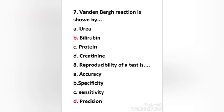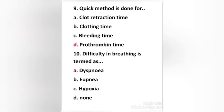Ninth question: the Quick method is done for — clot retraction time, clotting time, bleeding time, or prothrombin time? The right answer is option D — the Quick method is done for prothrombin time.